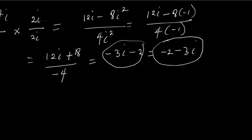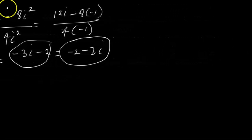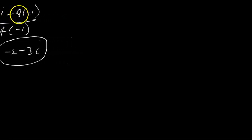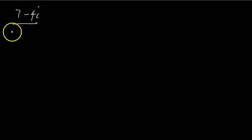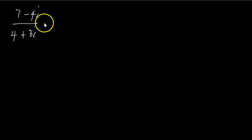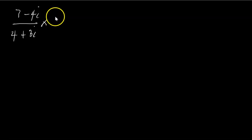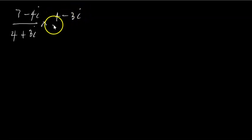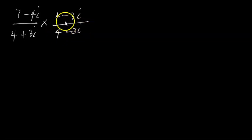Now let's take another example to further understand division of complex numbers. This example says (7 - 4i) / (4 + 3i). The first thing we're going to do is pick the conjugate of the denominator. The denominator is 4 + 3i, so its conjugate is 4 - 3i. We multiply by (4 - 3i) / (4 - 3i).